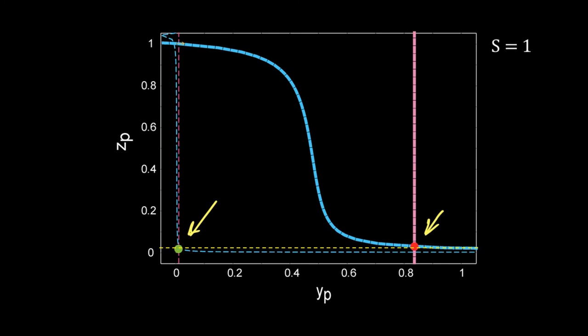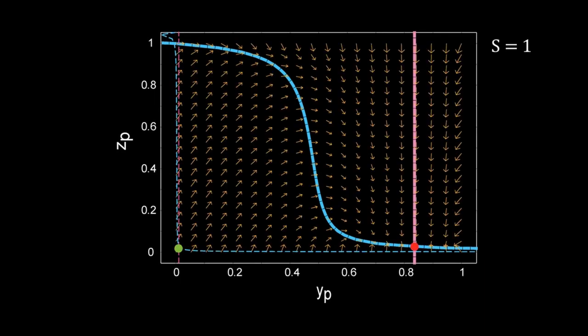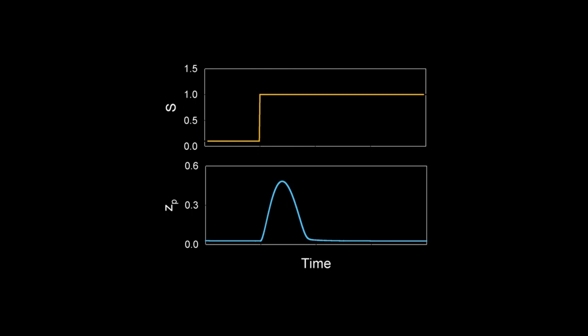So the change in S is not affecting the steady state of zp. Now draw the vector field for S equal to 1. The brown arrows are showing the direction of time evolution of the system. So if we start at the green dot, the trajectory would be this yellow line. First zp will increase and then it will drop to the steady state. So with sudden increase in S, there will be a transient rise of zp but then it will fall back to the original steady state.